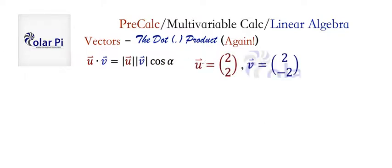So suppose the vector u is (2, 2), and the vector v is (2, -2). And I intentionally made them so that they are perpendicular. Clearly, these two vectors are at 90 degrees from one another. So alpha here between these two vectors is 90 degrees is what I'm saying.